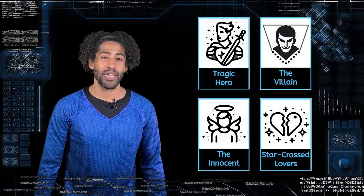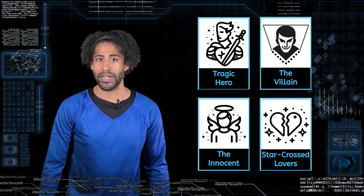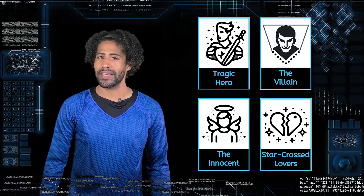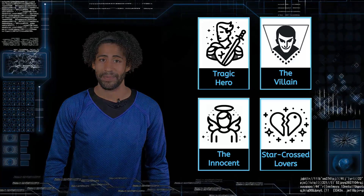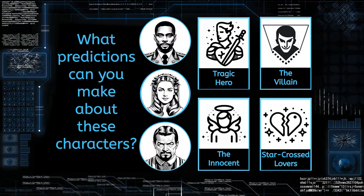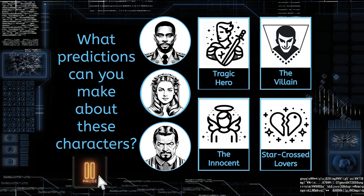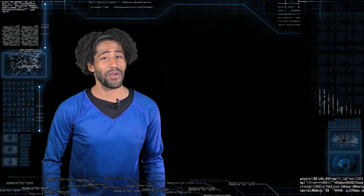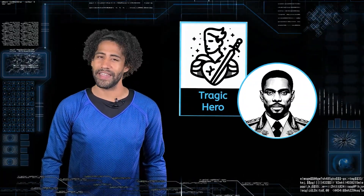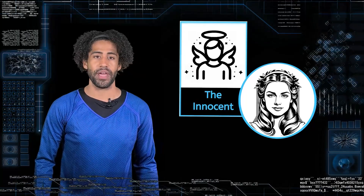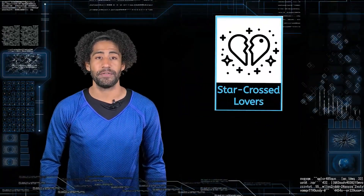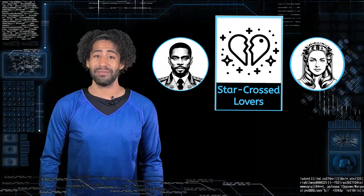Thanks to our understanding of archetypes, we know certain patterns will unfold. Think about the interplay between our tragic hero, villain, and innocent, as well as the ominous fate of our star-crossed lovers. What predictions can you make about how these characters' relationships and conflicts will develop as the story progresses? Pause the video while you think. Based on the archetypes, we can predict that the tragic hero Othello will face significant challenges due to some kind of tragic flaw leading to his downfall. The villain Iago, driven by jealousy and a desire for revenge, will manipulate the innocent Desdemona and other characters to achieve his goals. The doomed fate of the star-crossed lovers Othello and Desdemona suggests that their relationship will be tested by these forces, ultimately leading to tragedy.